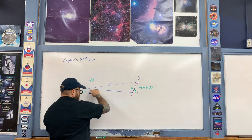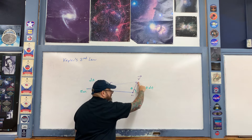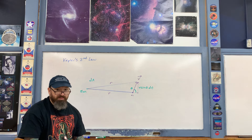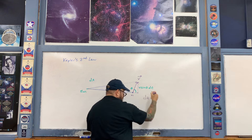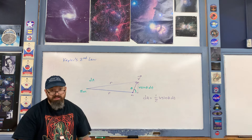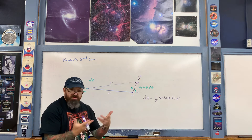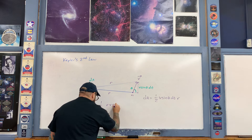The perpendicular component v sinθ multiplied by dt gives the height of the infinitesimal triangle. The area of the triangle is one half times base times height: dA = ½ × r × v sinθ × dt. Rearranging, we move dt to the denominator: dA/dt = ½ r v sinθ.